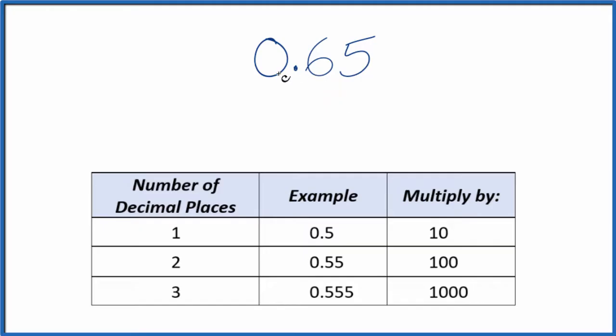What we want to do is first think of 0.65 as 0.65 over 1. Since we're dividing by 1, it's still equal to 0.65, but now we have the start of a fraction.